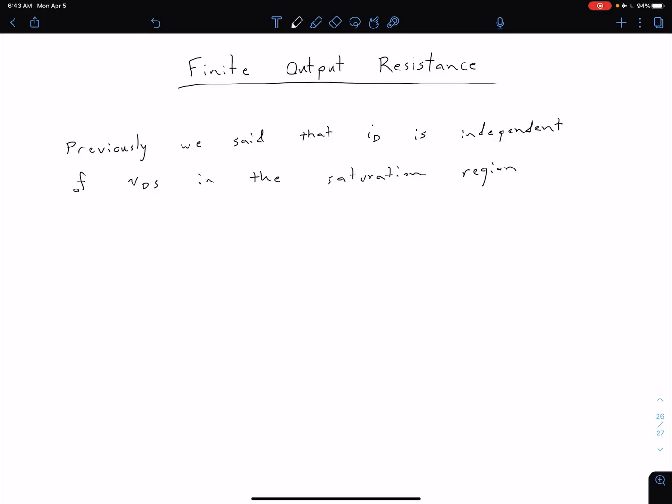One last thing we want to look at before we get to our DC analysis is the finite output resistance of our MOSFET transistor.